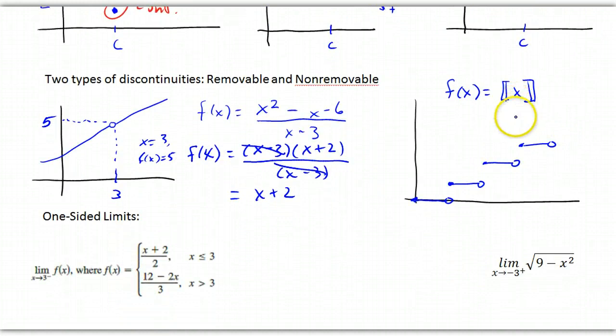Okay, here we have a non-removable discontinuity and it's a step function, greatest integer function. And there's no way that I could fill in the holes and make these gaps connect. So, that's called a non-removable discontinuity.